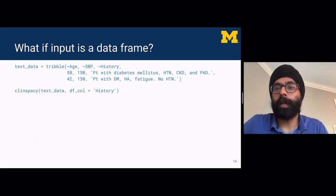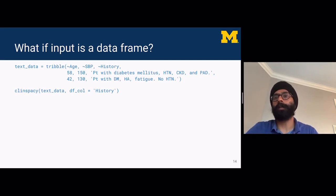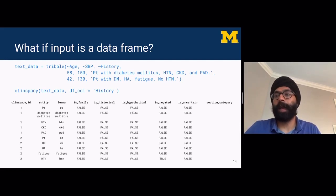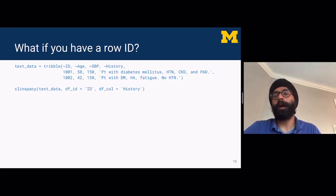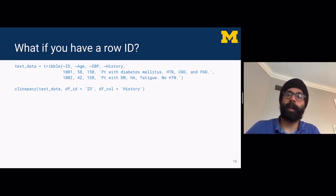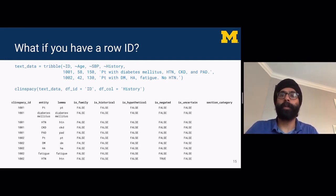You can also feed a data frame directly into ClinSpaCy. By providing the df_col argument to specify which column contains the text data, it processes and returns the same output as before. This is beneficial because you can reference identifiers already in your data set — if you provide the df_id argument with an ID column, the ClinSpaCy ID will refer to the existing identifier in your data set.